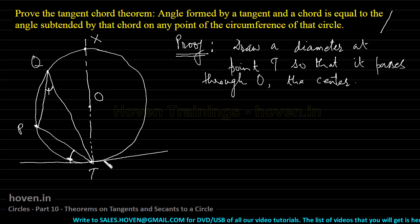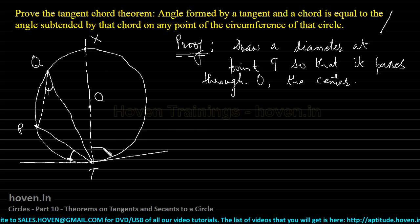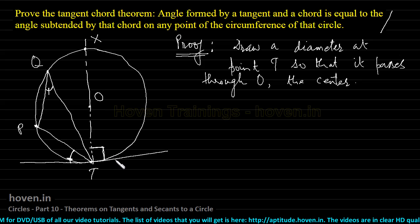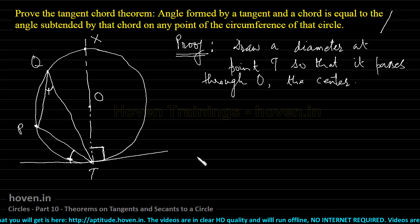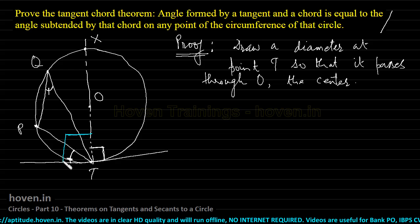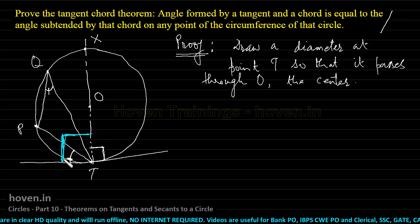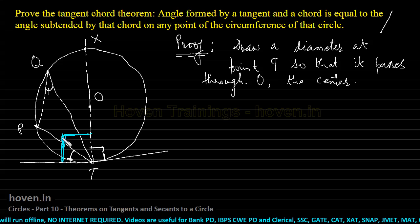XT is a diameter. Since XT is a diameter, this angle will be a right angle — because the radius is always perpendicular to the tangent. This diameter is perpendicular to the tangent, as we already know from theorems proved earlier. So this entire angle is 90 degrees.